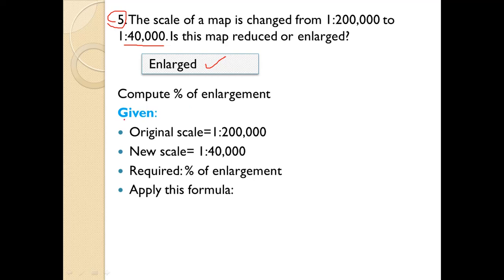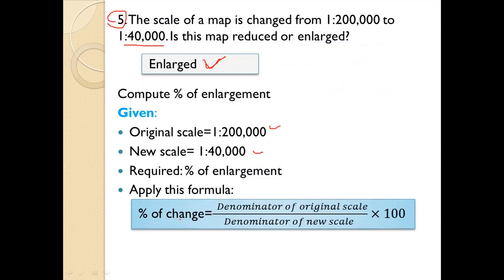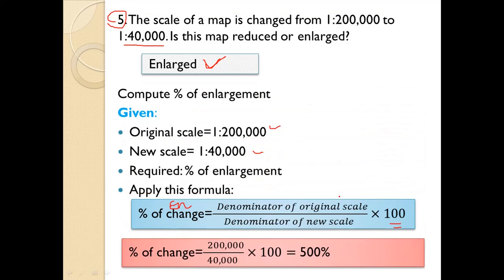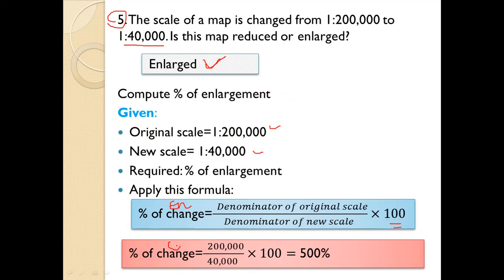To compute the percent of enlargement, use the formula: percent of enlargement equals denominator of original scale divided by denominator of new scale, times 100%. So percent of enlargement equals 200,000 divided by 40,000, times 100%, which equals 500%.